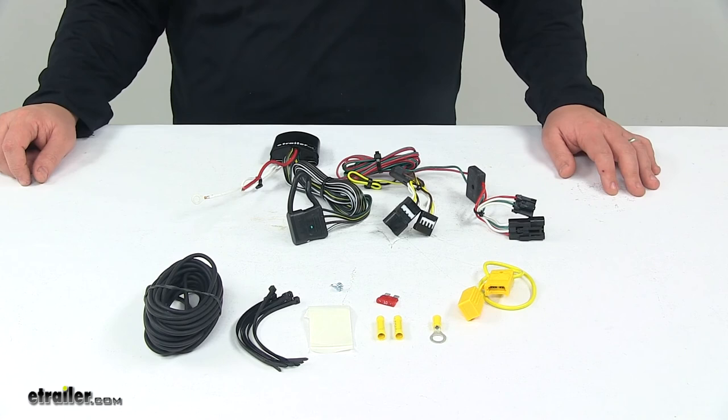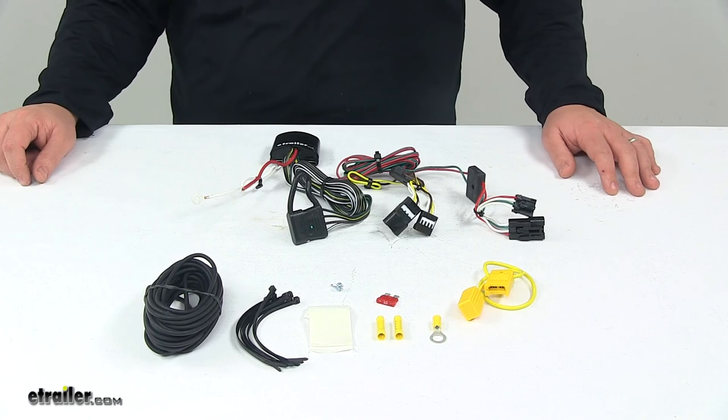The unit also comes with detailed installation instructions to help walk you through the whole process step-by-step. And that's going to do it for today's look at the T1 vehicle wiring harness with the four-pole flat trailer connector.